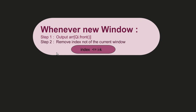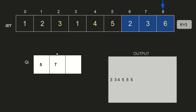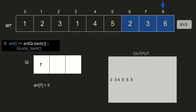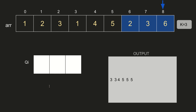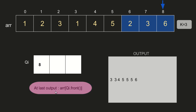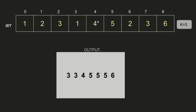The window shifts and we perform these two steps again: output array[deque.front()]. deque.front() is 5, so array[5]=5, and we output it. Starting from the front, we remove elements not in the current window: index 5 is not in the current window so we pop it. Index 7 is in the current window. Array[i]=6 is greater than array[7]=3, so we pop index 7 and insert index 8. Finally, we output array[deque.front()]=array[8]=6. So for this array, we got the output as shown.